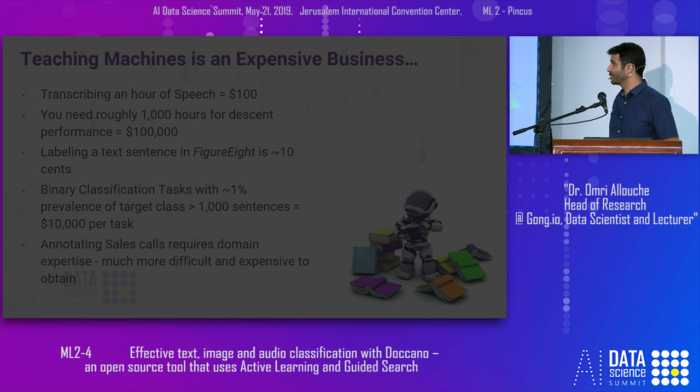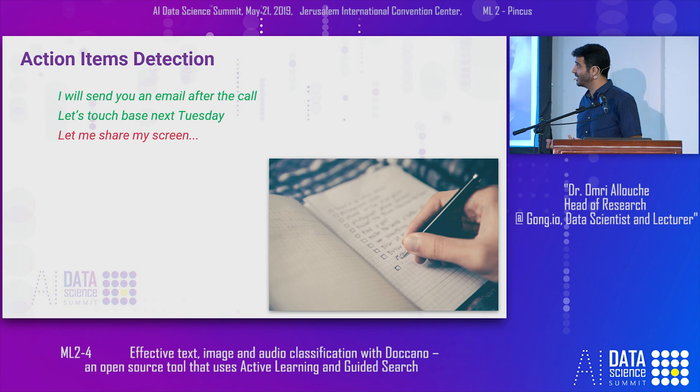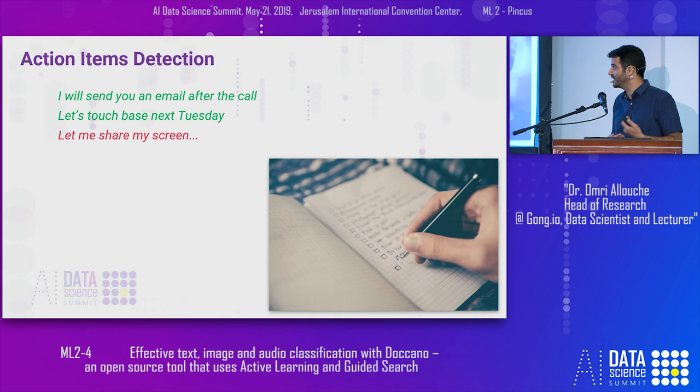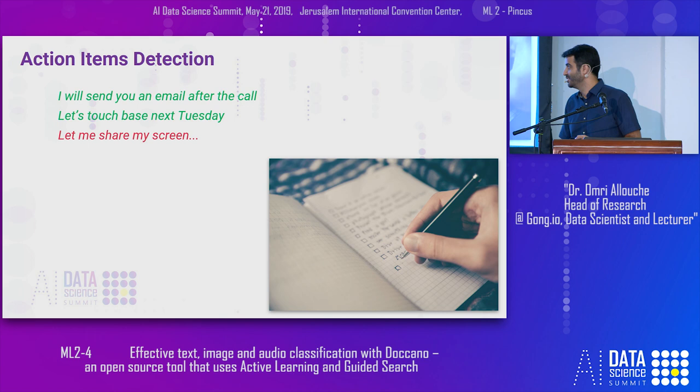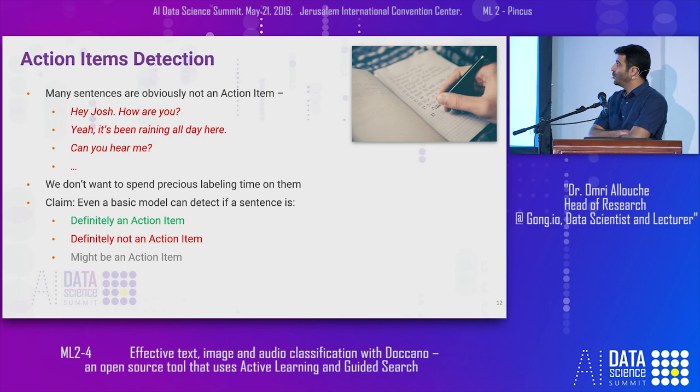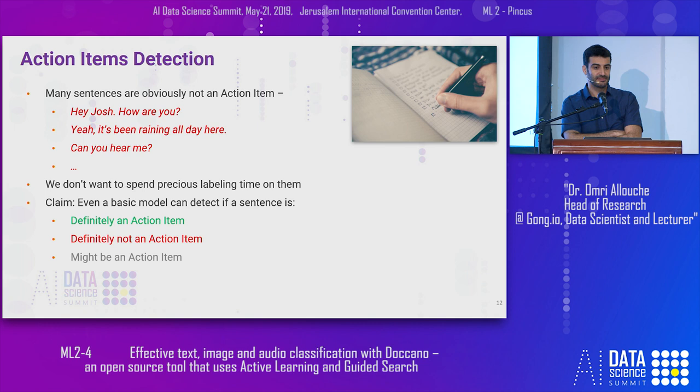Let's go through one example. One of the things we detect in sales calls are action items — 'I'll send you an email after the call,' 'Let's touch base next Tuesday,' but not 'Let me share my screen with you.' We want to detect and extract those from sales calls automatically, so the salesperson has a list of things they promised. Now, we know there are sentences that are pretty easy to classify — 'Hey Josh, how are you' is obviously not an action item. I probably don't want my labelers to spend time on such obvious sentences.